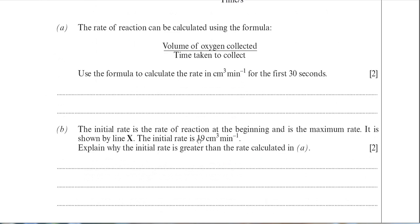Let's go down to Part A — it does involve a calculation. The rate of reaction can be calculated using the formula: volume of oxygen collected divided by time taken to collect. You need to know how to calculate rate. Basically, to calculate rate you divide a value by time — in this case, we're looking at the volume of oxygen collected in a given time.